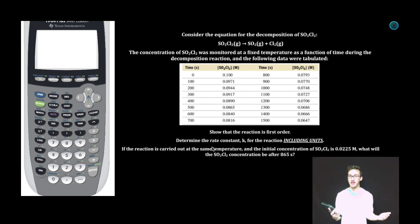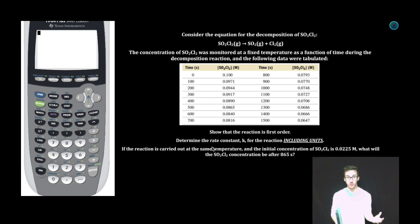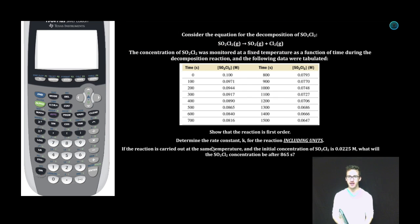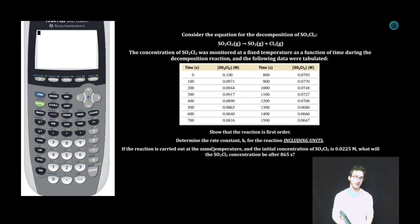Let's take a quick look at a sample problem. Consider the equation for the decomposition of SO₂Cl₂. The concentration of SO₂Cl₂ was monitored at a fixed temperature as a function of time during the decomposition reaction, and the following data were tabulated. First, show that the reaction is first order.